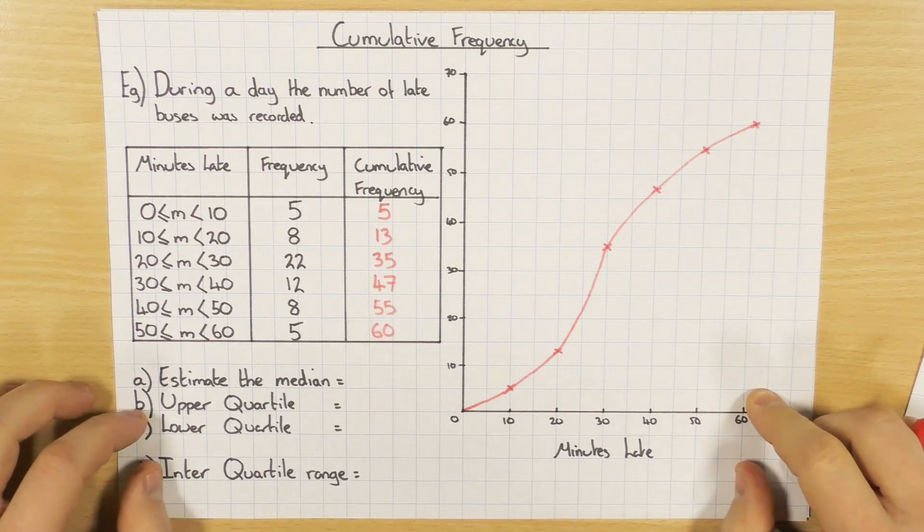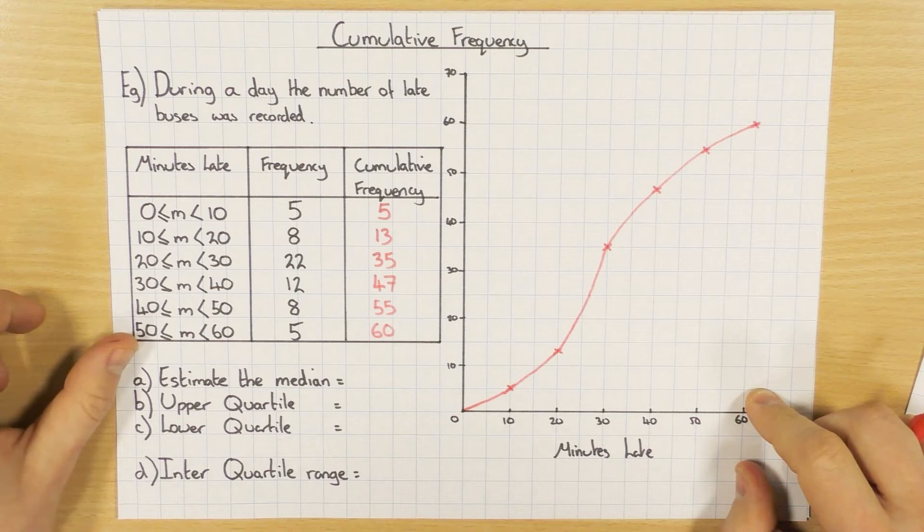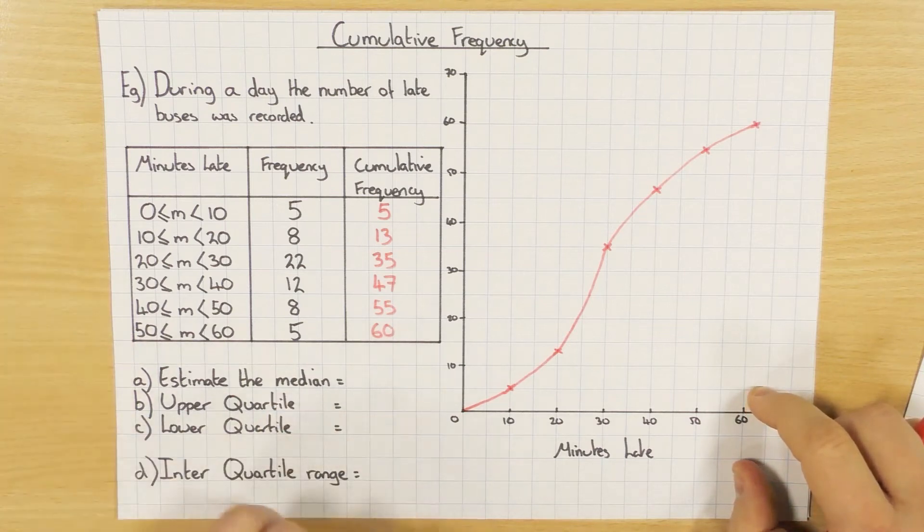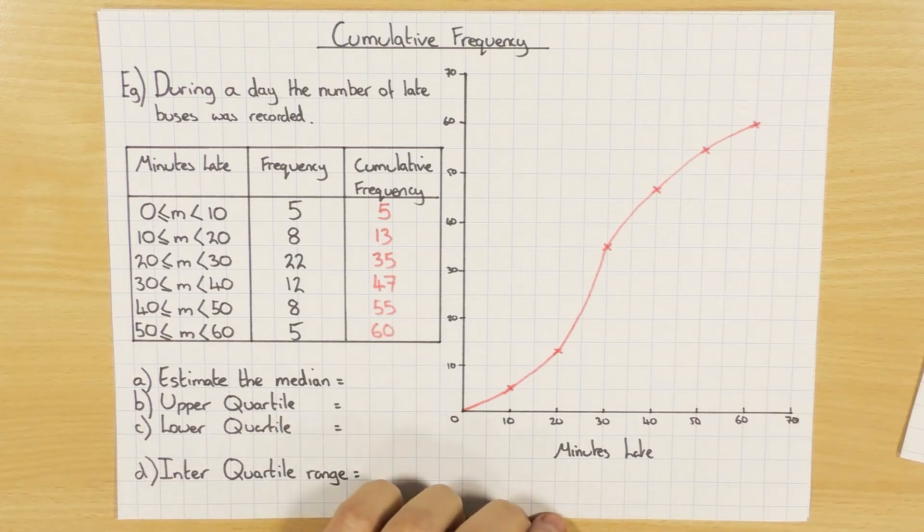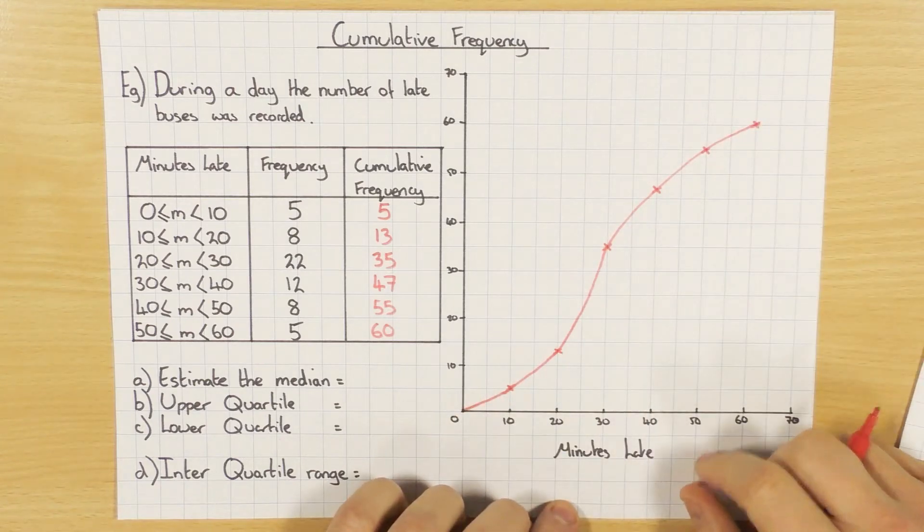Questions that can be asked with a cumulative frequency are estimating the median, the upper quartile, lower quartile, and then the interquartile range. So let's start off with the median. So the median is the middle value. They're already in order.